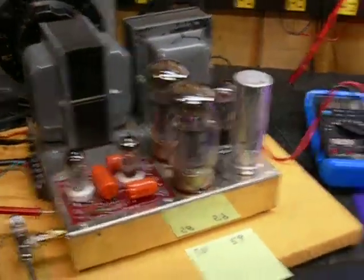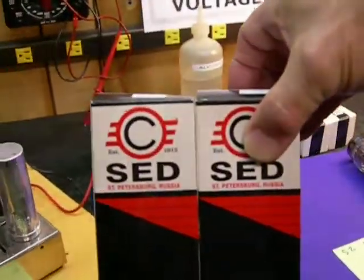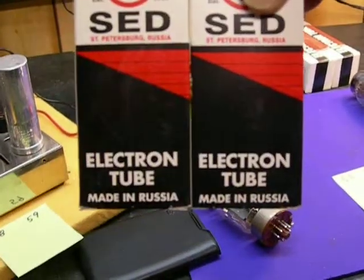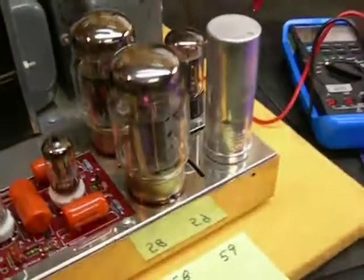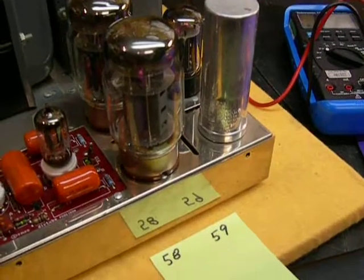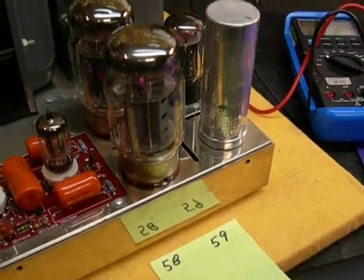Next up are the Wing C SED electron tubes made in Russia. They're KT88s. These are stamped KT88 made in Russia.